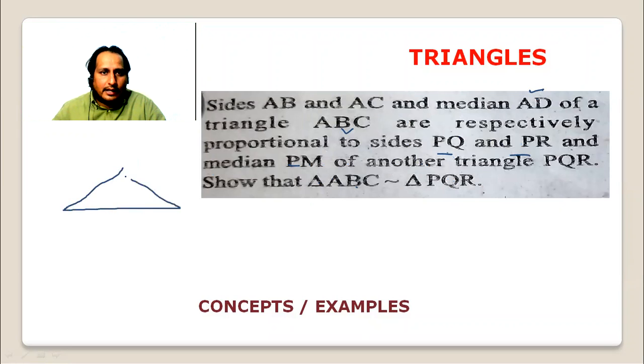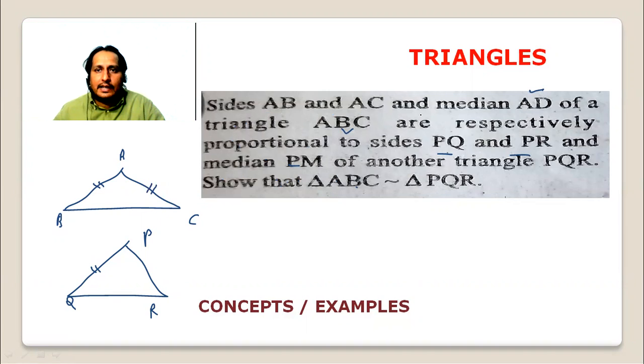Let's take a look at this triangle. This is triangle ABC with vertices A, B, C. And median AD of the triangle, where AD is the median, with the base divided 1 is to 1.